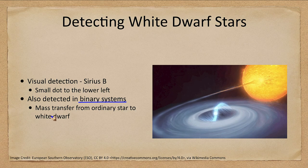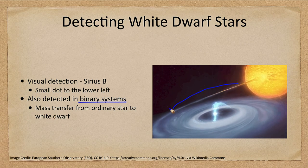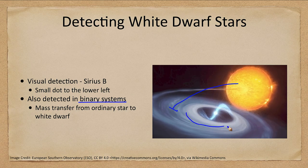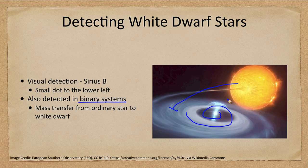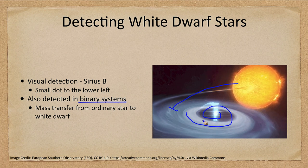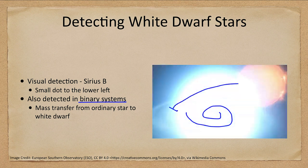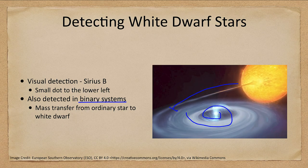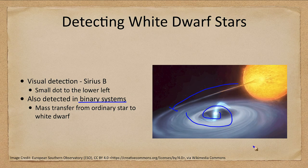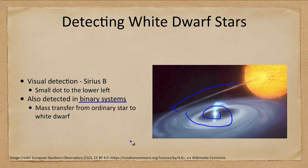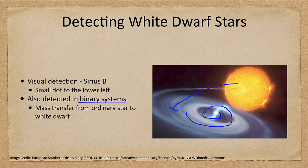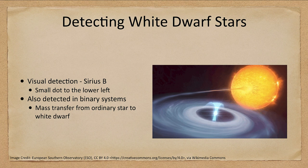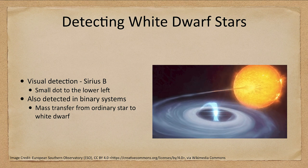We can also detect white dwarfs in binary systems through their gravity. Material from one star can be pulled into an accretion disk around the white dwarf, and as it swirls around and builds up we can see the energy released. Eventually, if enough material accumulates, it will undergo what we call a nova explosion — nuclear fusion on the surface of the white dwarf. This gives us another way to detect white dwarfs, even if you can't visually separate them from the companion star.